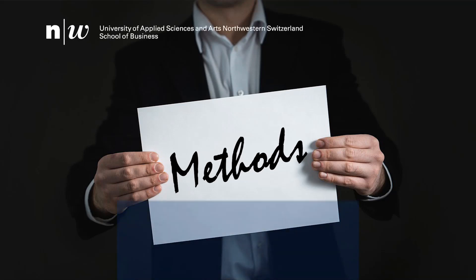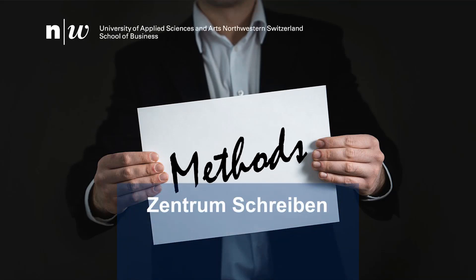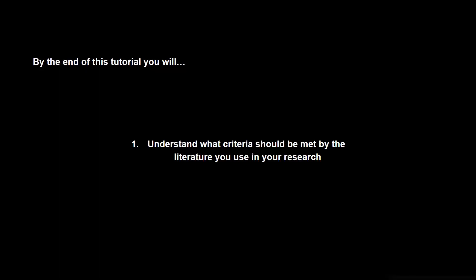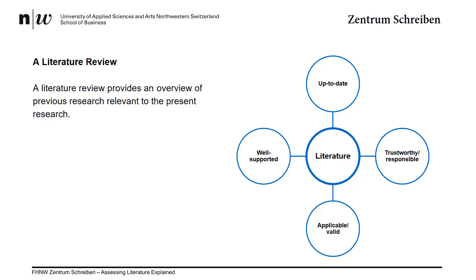Hi and welcome to this FH&W Centrum Schreiben tutorial. In this tutorial we'll focus on the strength of evidence and its validity. By the end of this tutorial you should understand what criteria should be met by the literature you use in research and understand how to assess whether these criteria are met. In part 1 we discussed how recent publications should be and how to assess their trustworthiness. In this video we will focus on how to assess how well supported the claims in the literature are and how to assess their validity.